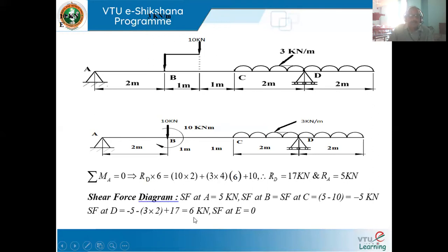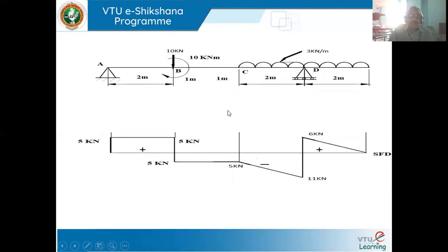At E, there is no load. Since the uniformly distributed load varies with distance, at distance zero from E it is zero. Once we identify the forces at different points, we can mark them on the shear force diagram. Even without writing the intermediate values, we can draw the diagram directly. Here after completing the shear force values, I have drawn the shear force diagram.